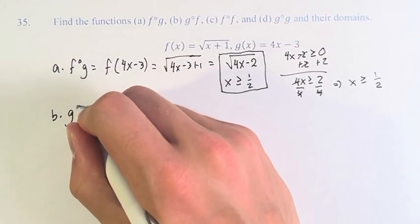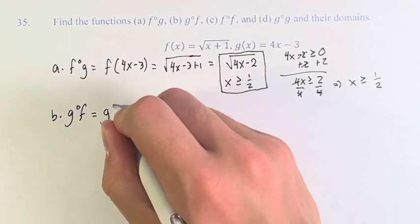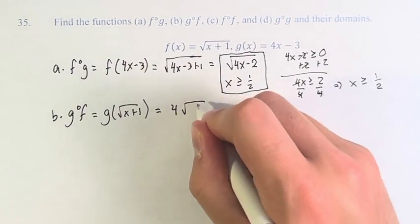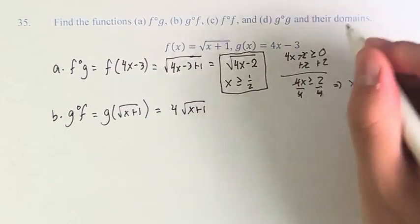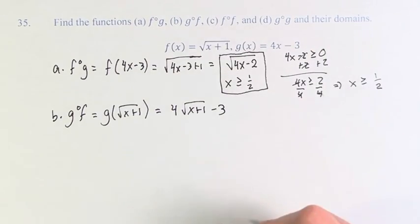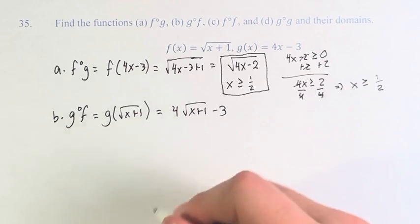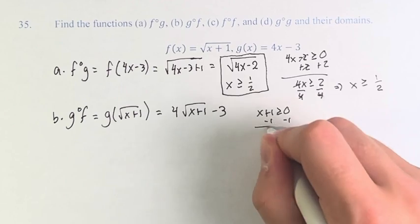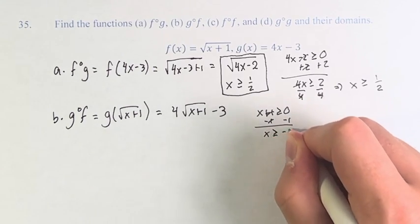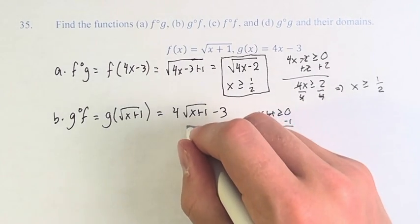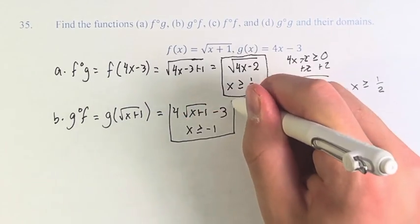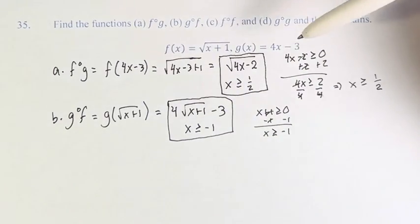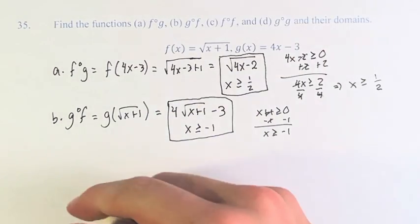Next, g of f. This is g of the square root of x plus 1. Therefore, we do 4 times the square root of x plus 1, since we're just plugging it in for x, minus 3. Now, x plus 1 has to be greater than or equal to 0, so solving for x, x has to be greater than or equal to negative 1. This is the domain and function for g of f.